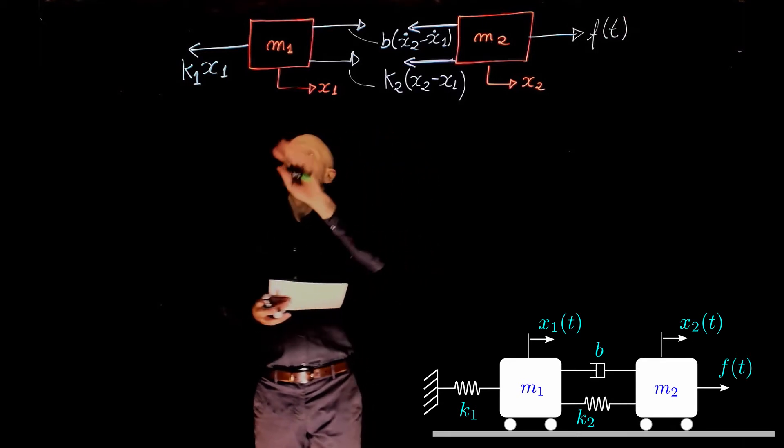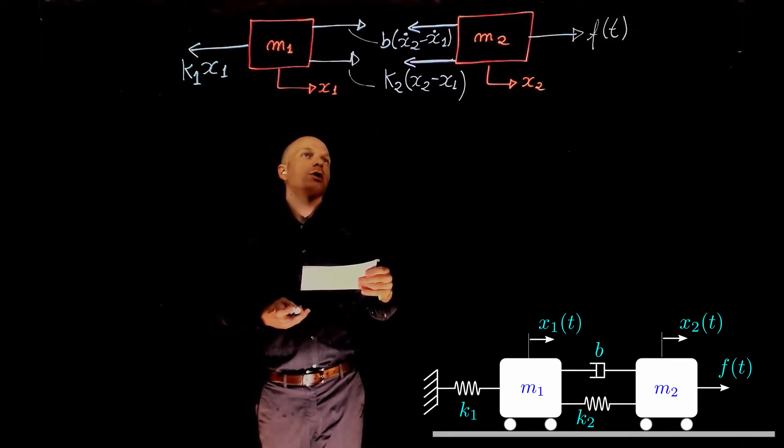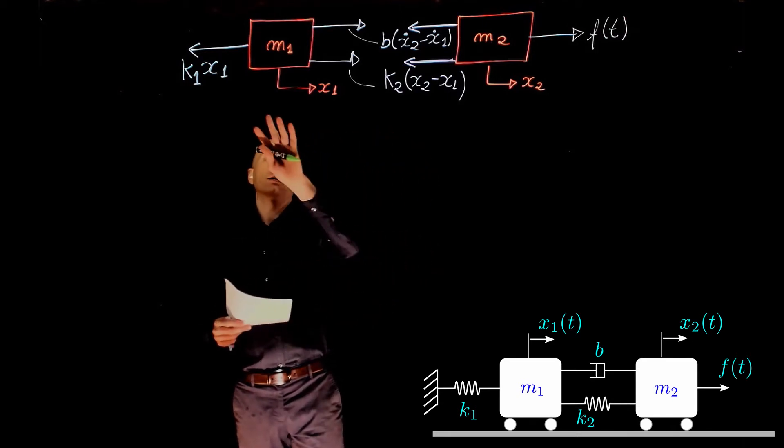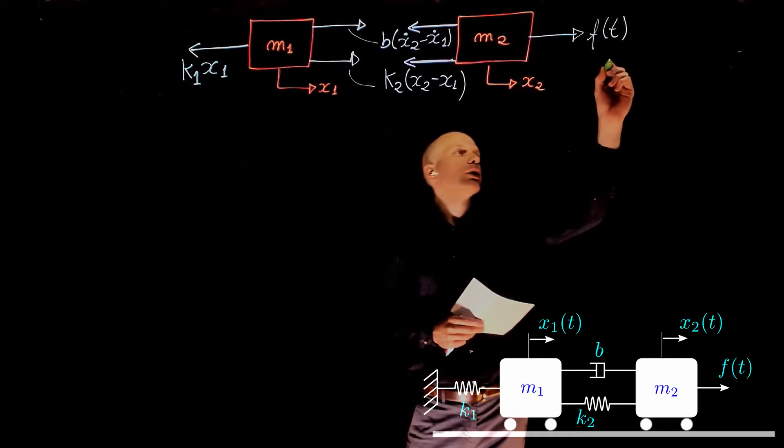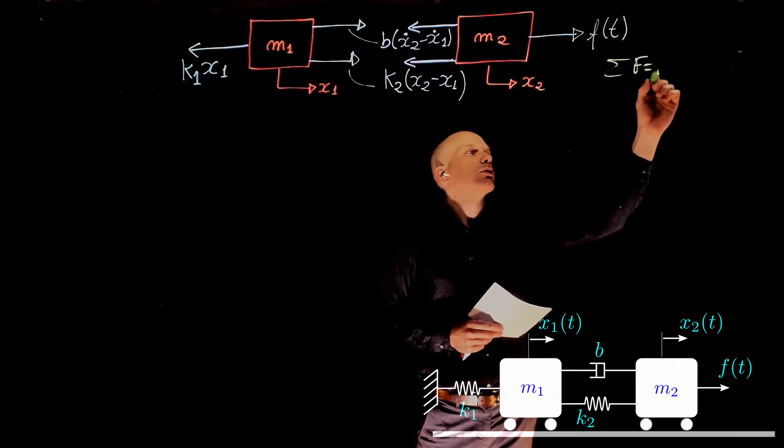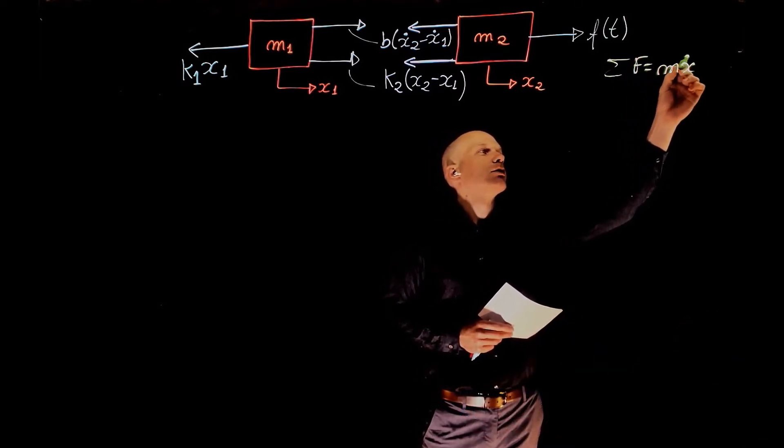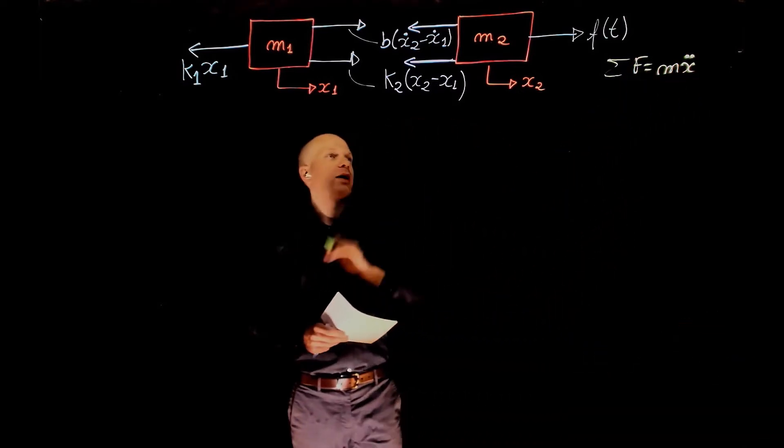Now that we have all the free body diagrams, we can write the equations of motion for masses M1 and M2. Starting with M2, we know that sum of forces equals M times x double dot for both masses.